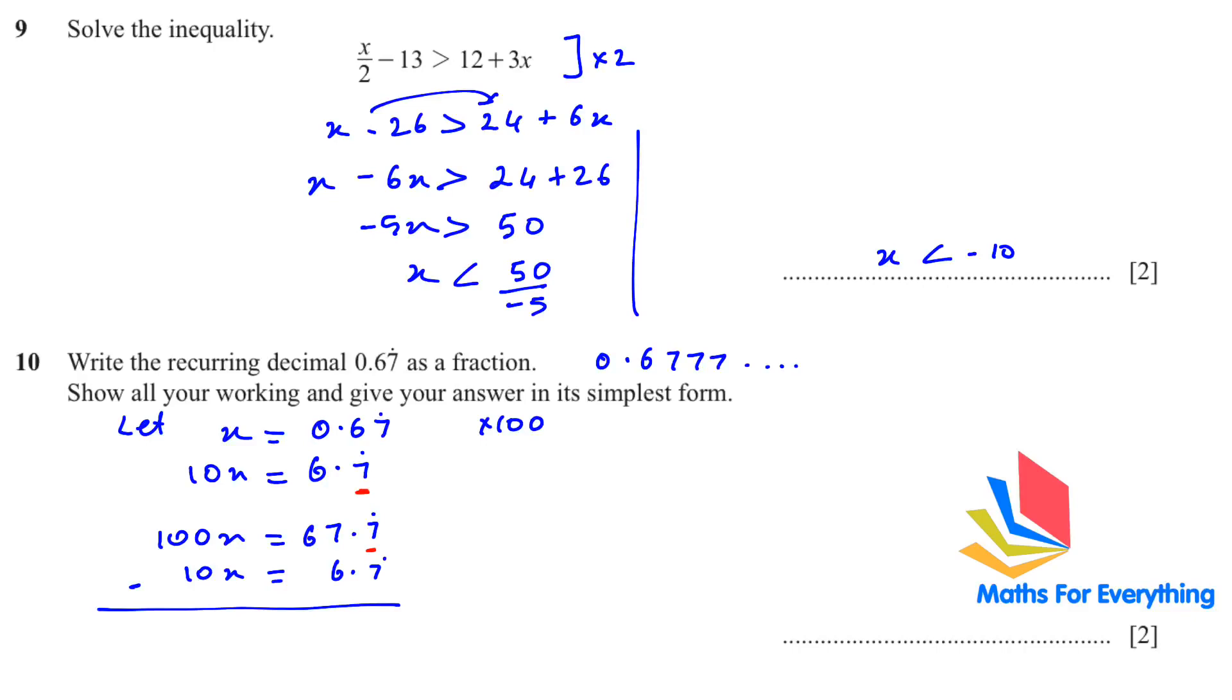So 100x minus 10x will give us 90x, and 67.7̇ recurring minus 6.7̇ recurring will give us 61 and this will get cancelled. To find x, we have 90x equals 61. Therefore x equals 61 over 90.